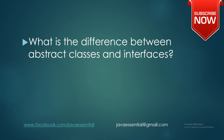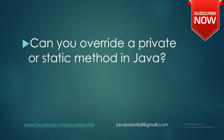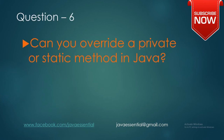Question number five is: what is the difference between abstract classes and interfaces? Question number six is: can you override a private or static method in Java?